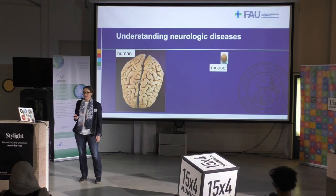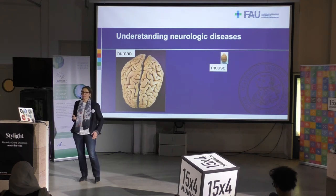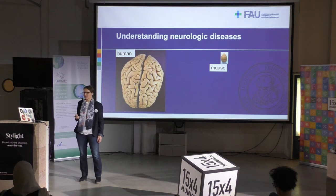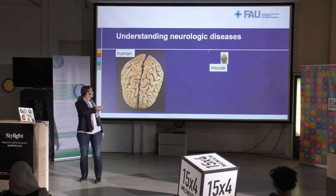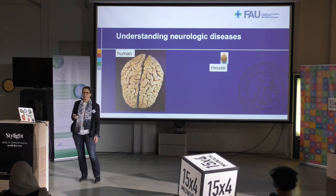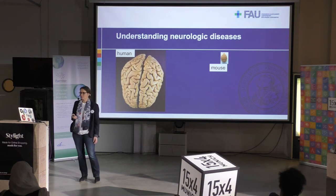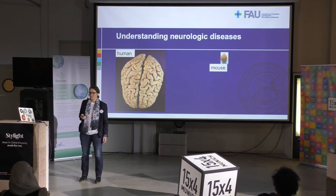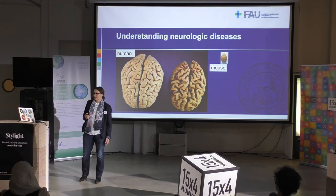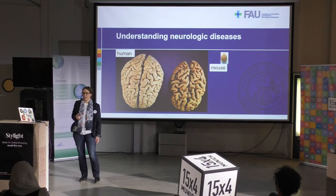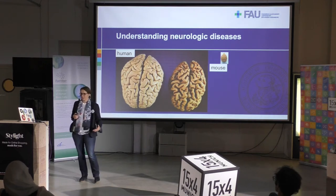For many, many years, the mouse has been the most studied model for trying to understand what's going wrong. But, as you can see here, there are major differences in size, but also in the structure of, for example, the brain of a mouse. The next step to get closer to humans would be to go for neuropathology. And, as you can see here, this is an Alzheimer's disease brain. There is a clear difference, but this is the end stage of the disease.